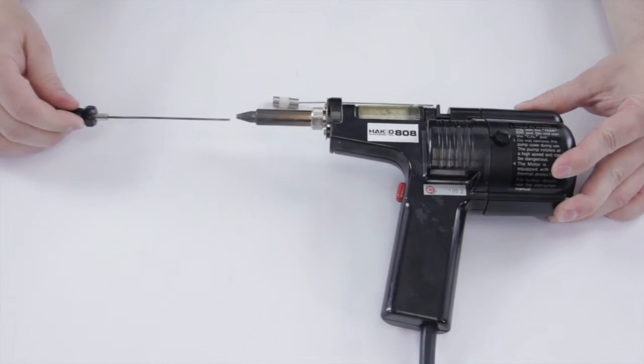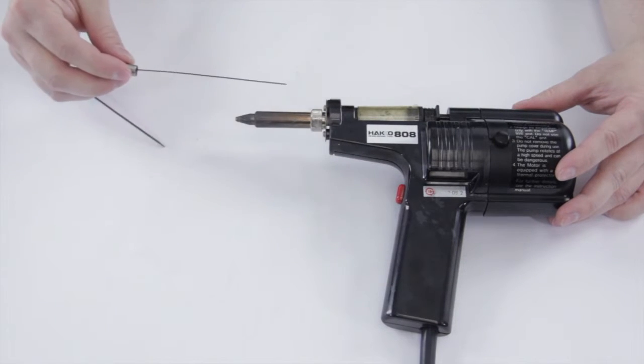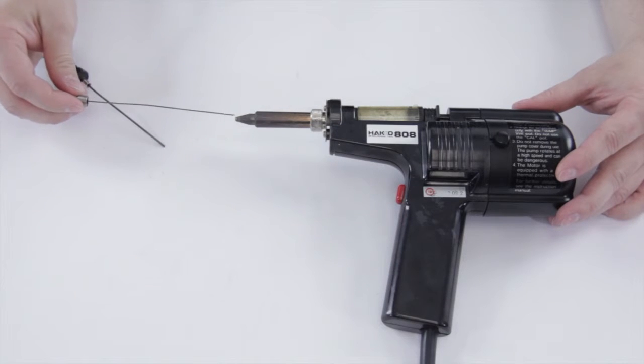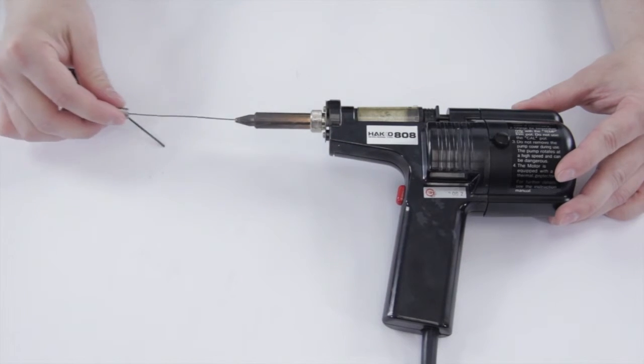Once you've done that a few times you will want to finish off using the cleaning rod as you can see. It goes right the way down into the solder cartridge. And again run that for a few times.